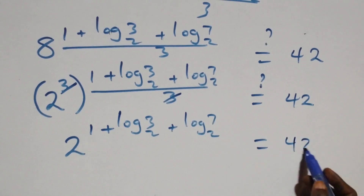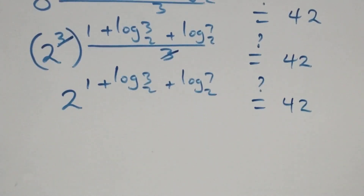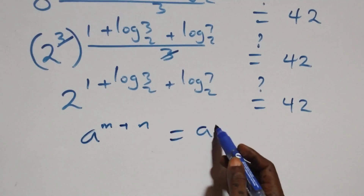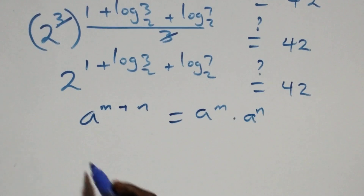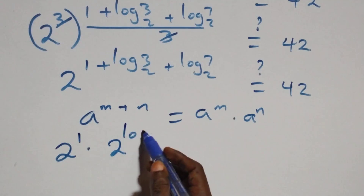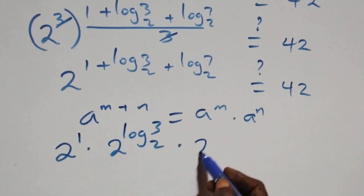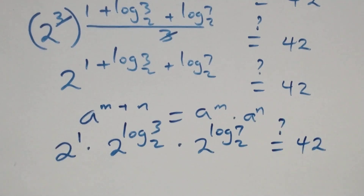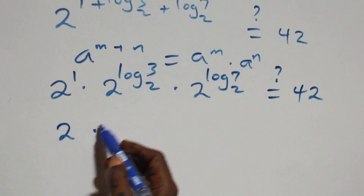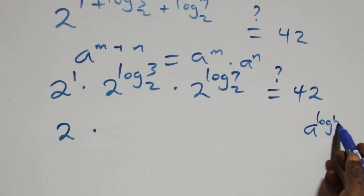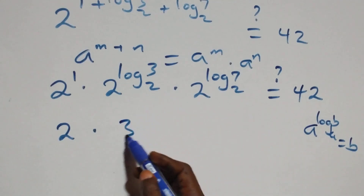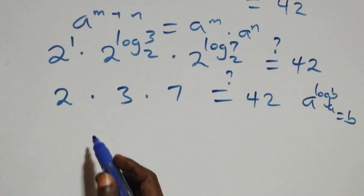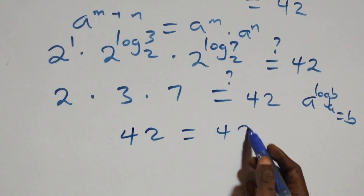This equals 42. Applying the exponent addition rule: a^(m+n) = a^m · a^n. So we get 2¹ · 2^(log₂3) · 2^(log₂7). Using the identity a^(log_a(b)) = b, this becomes 2 · 3 · 7 = 42, which equals the right-hand side.